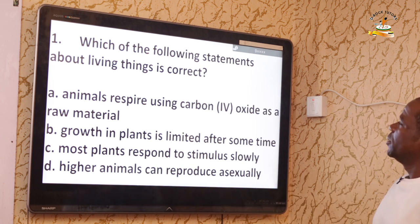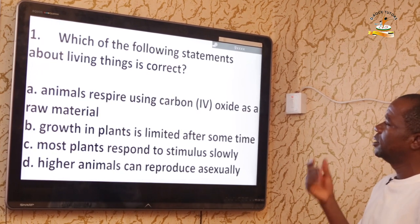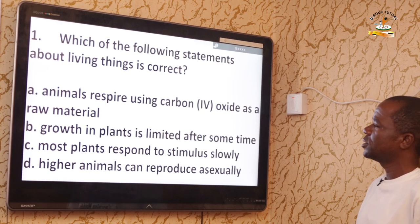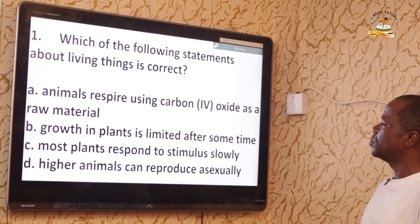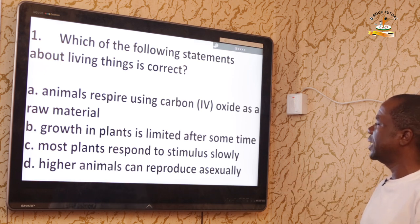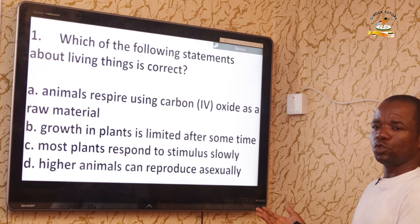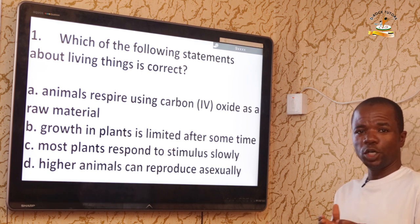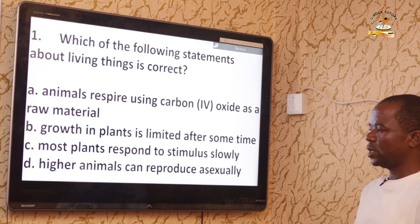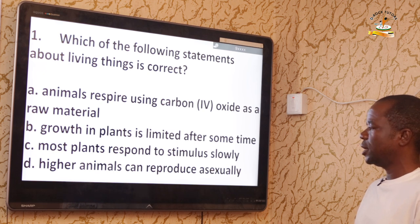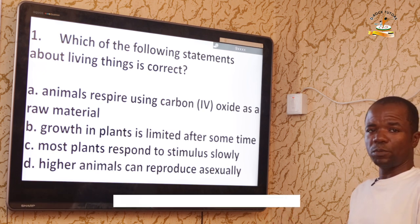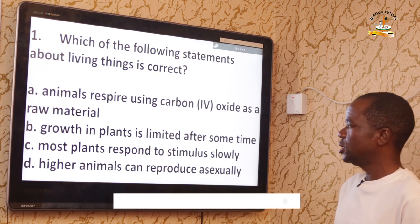Let's start with question one: Which of the following statements about living things is correct? Option A — animals respire using carbon dioxide as raw material — is wrong because animals always respire using oxygen. Option B — growth in plants is limited — is wrong because growth in plants is endless. Option C — most plants respond to stimulus slowly — is correct, as plants do not respond quickly to stimulus the way animals do. So the correct option is C.